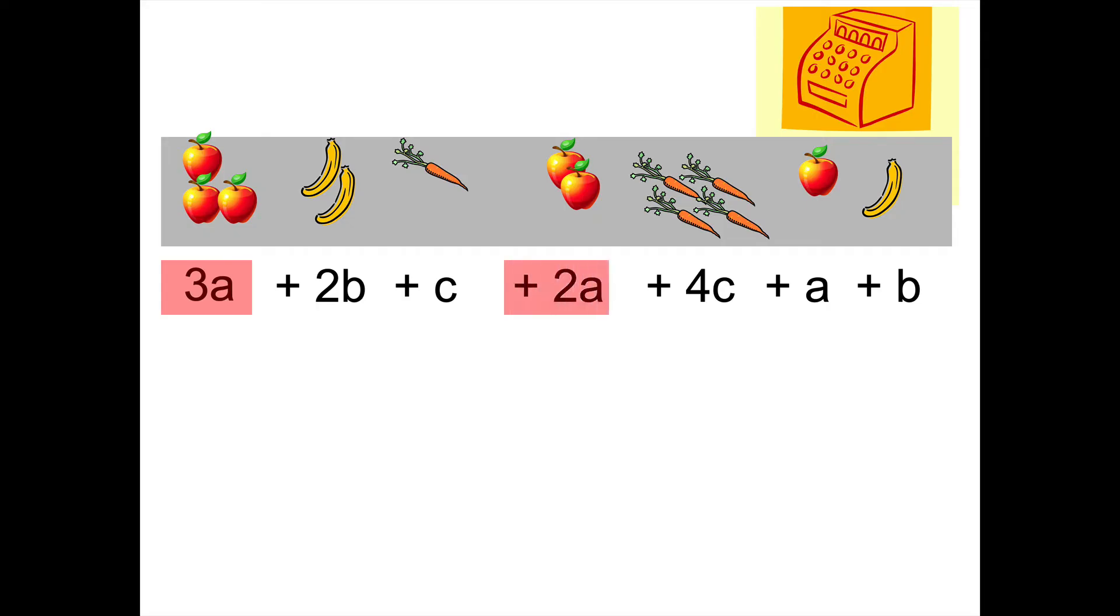So 3a plus 2a plus 1a for a grand total. How many a have I got? That's right, 6a. Plus 2b plus 1b. How many b do we have? 3b. Plus c plus 4c. How many carrots do we have? Plus 5c.